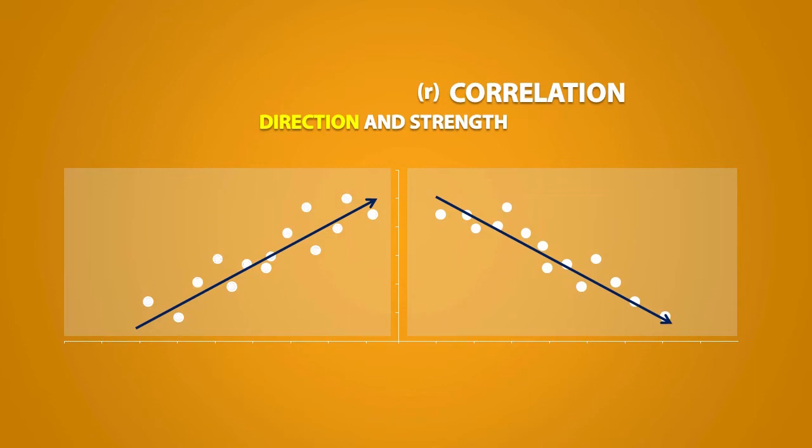So it tells us if a data set has an upward slope or a downward slope. If we have an upward slope, we can say that r is positive. If we have a downward slope, then r is negative.